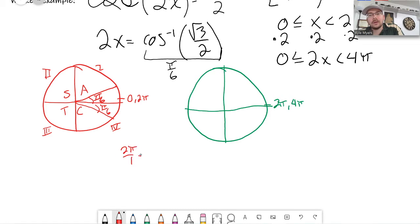That'd be 2π, which is 12π over 6. So if all the way around the circle would be 12π over 6, then I could go back one to 11π over 6, and that would be one of my answers as well. So far I've got π over 6, and 11π over 6.